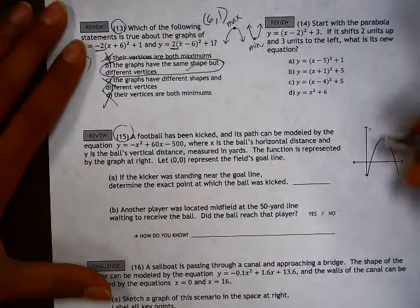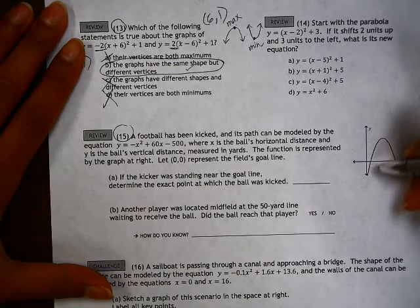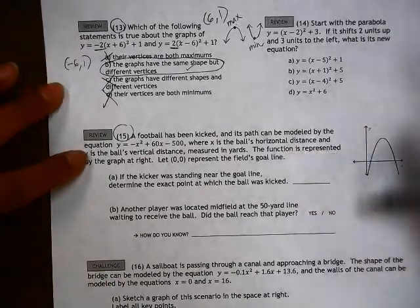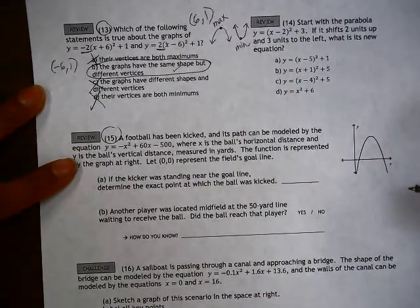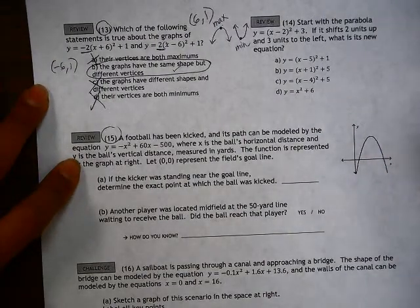A football has been kicked and the graph of the football's path is given. The equation of this parabola is also given. X is the horizontal distance, Y is the vertical distance, and we're measuring this in yards.